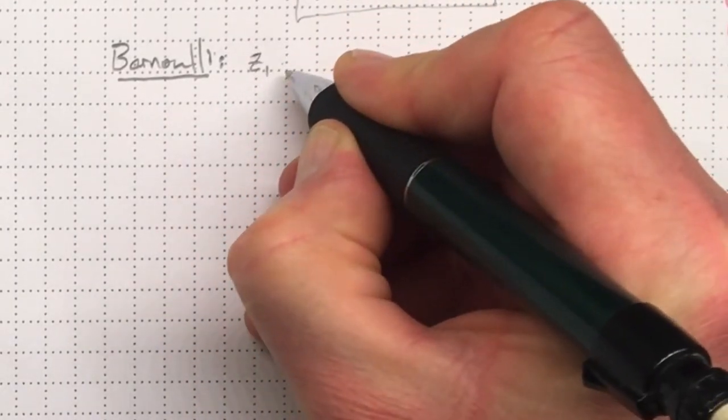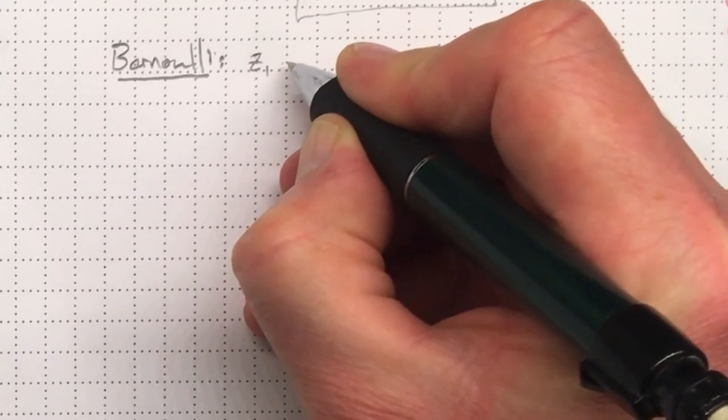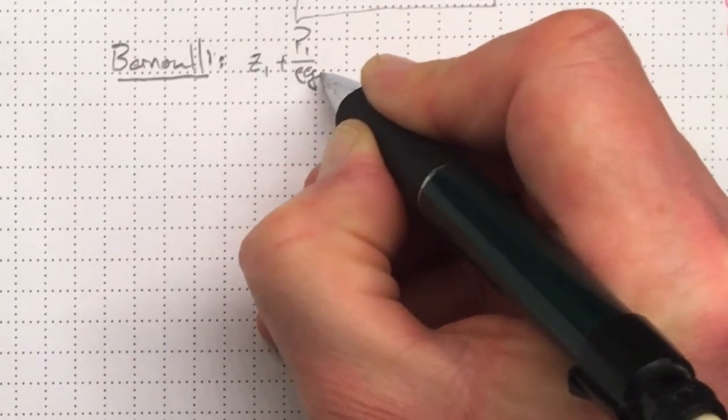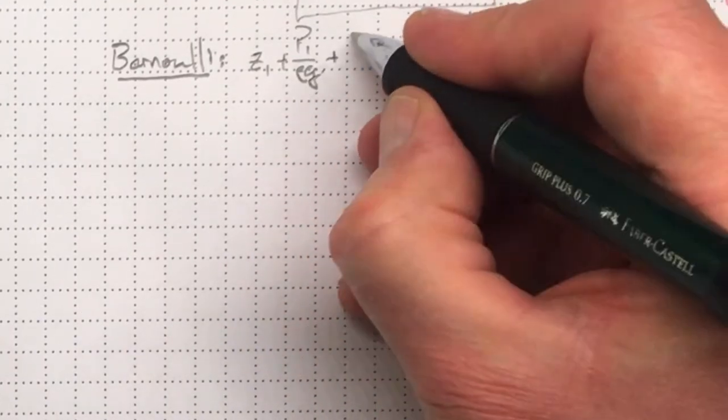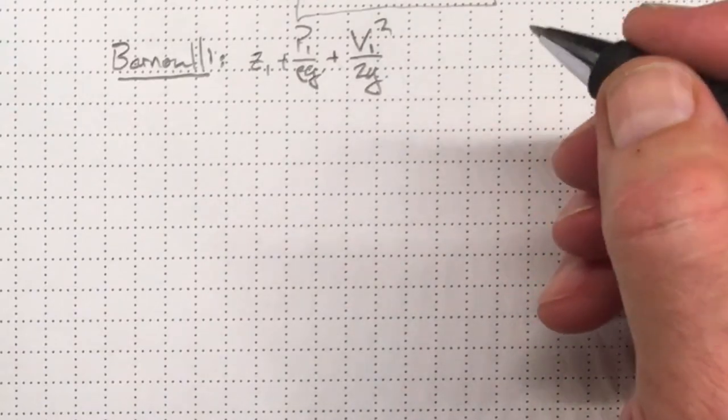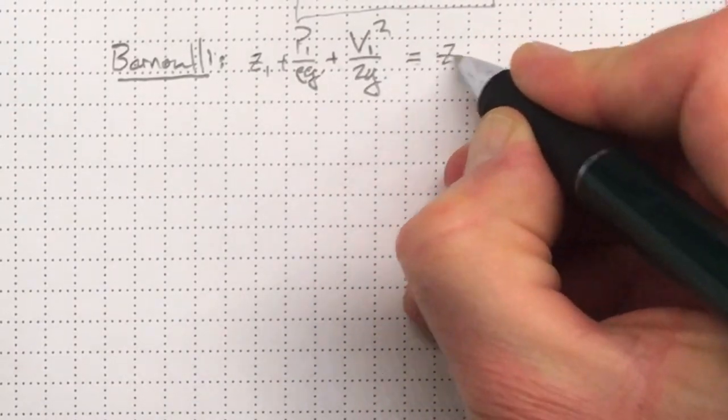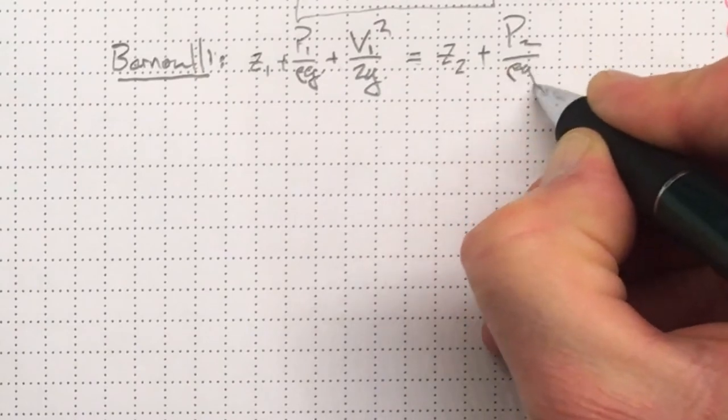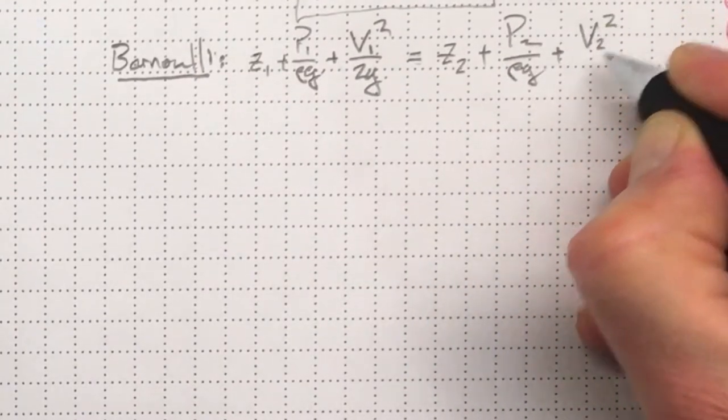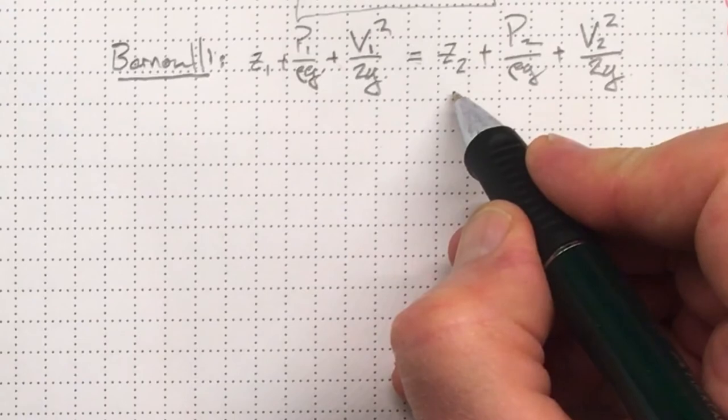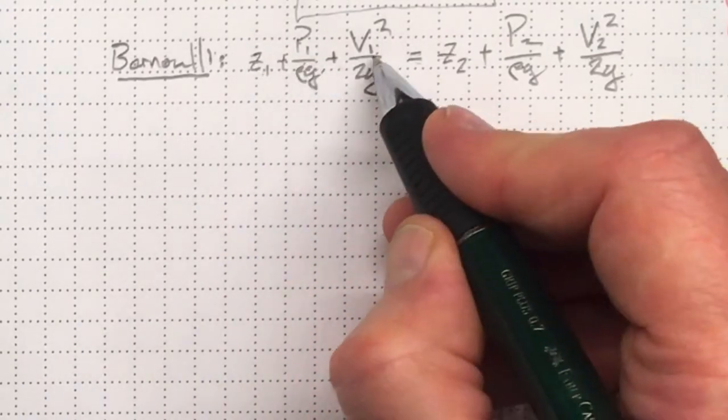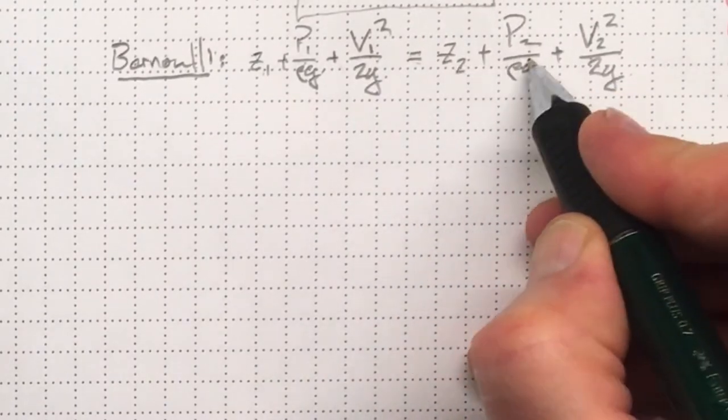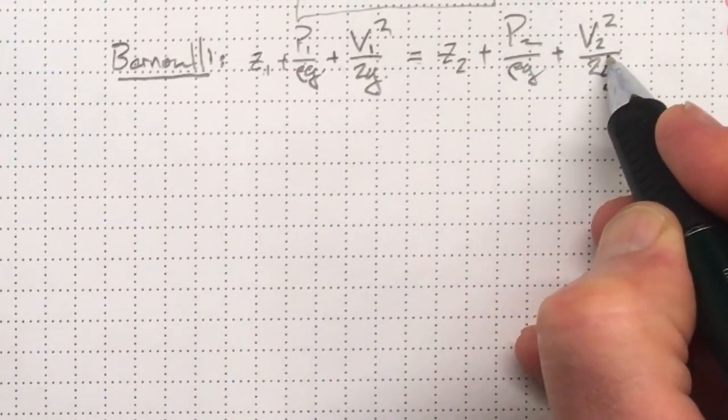Z1, that's the elevation. That's the potential energy of elevation for that particle at location one. P1 over rho g is the potential energy of pressure for that particle at location one. And V1 squared over 2g is the kinetic energy. So the potential energy of elevation and of pressure that we had at one plus the kinetic energy that we had at one should match up with the potential energy at two and the kinetic energy that we have at location two, if energy is conserved. And it usually is.